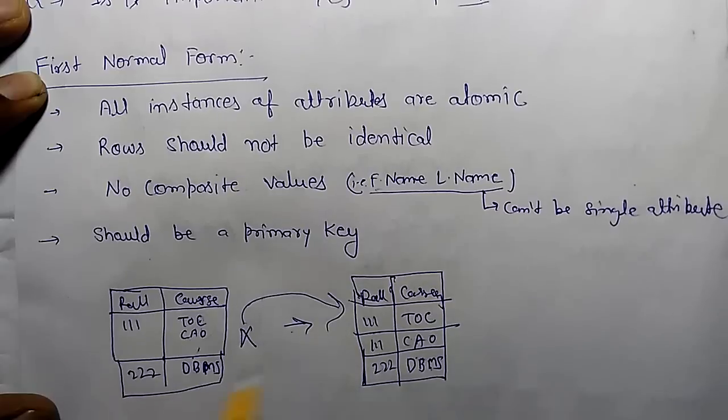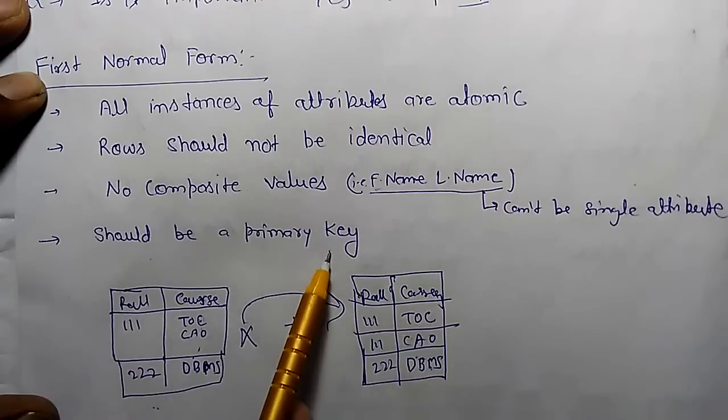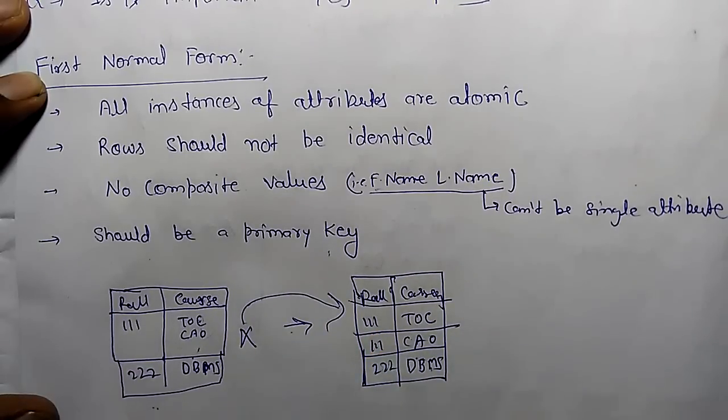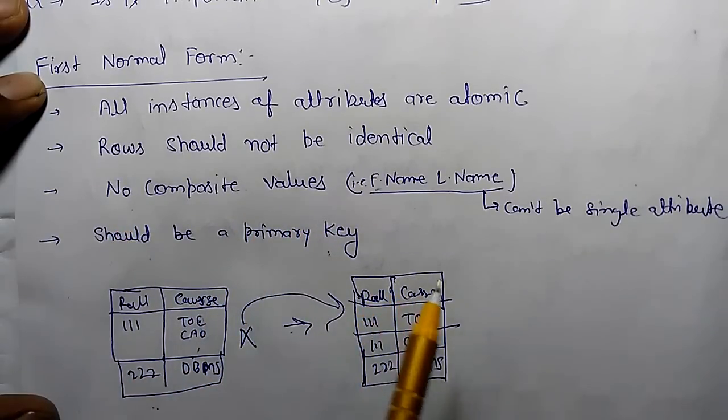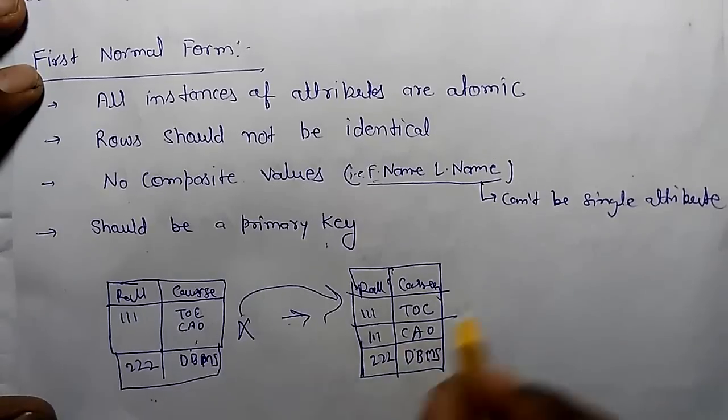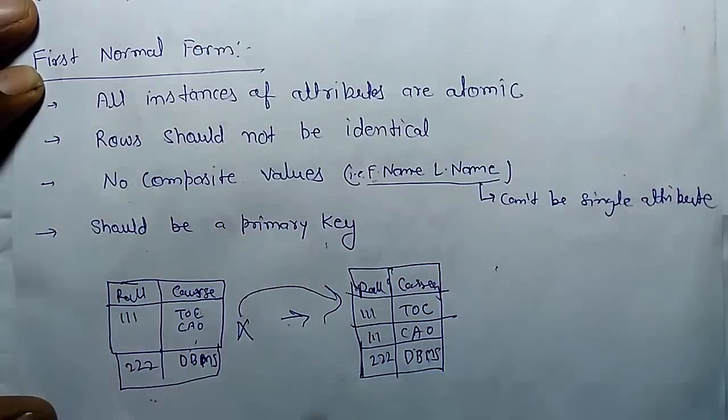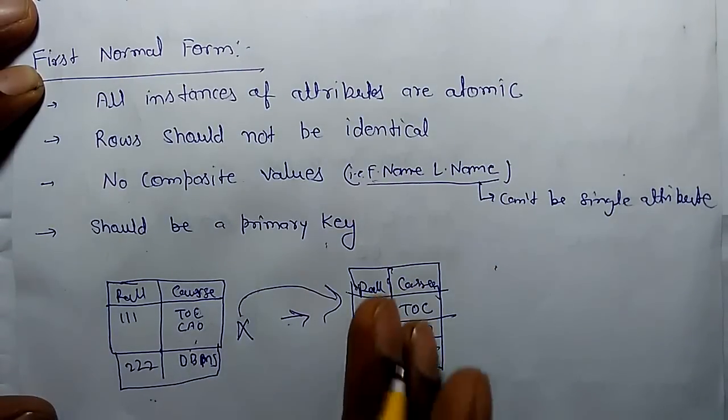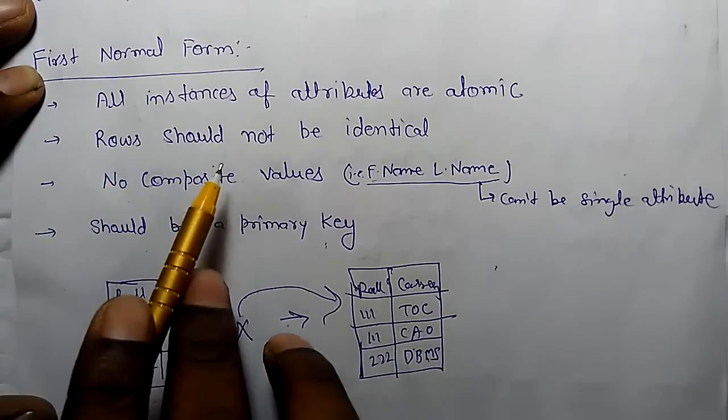Now we can see how to convert a non-first normal form table into first normal form. Some other properties are there. It should have a primary key through which you can search the data. No composite values should be there. It means if there is roll number and name, first name and last name cannot be a single attribute. There should be two columns, one for first name and another for last name.